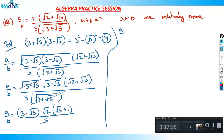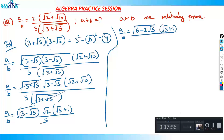Further simplifying, (3 − √5) · √2 under root becomes √(6 − 2√5) under root. So a/b equals √(6 − 2√5) · (√5 + 1) divided by 5. I did this because 6 − 2√5 can be factorized using the a² + b² − 2ab identity.